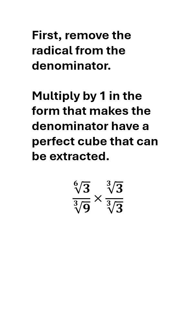So I'm going to multiply. I have the cube root of 9, which is 3 squared. So if I multiply by the cube root of 3, I'll have the cube root of 27, which is 3.